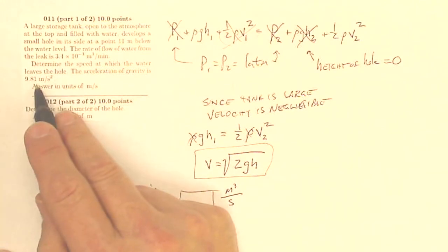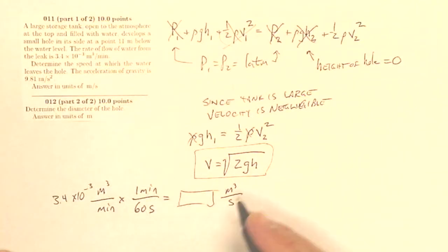Well, I know the speed that it's leaving the hole, so I know that my flow rate is also going to be my area times my velocity. So if I know my velocity and I know my flow rate, then I can get my area.